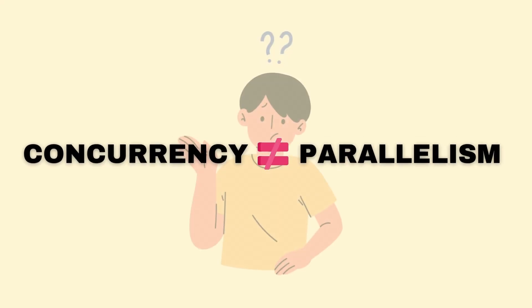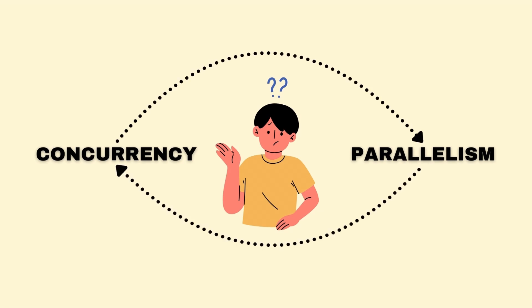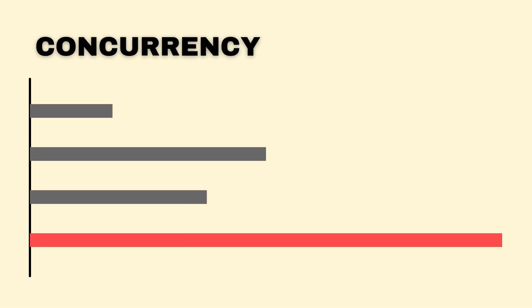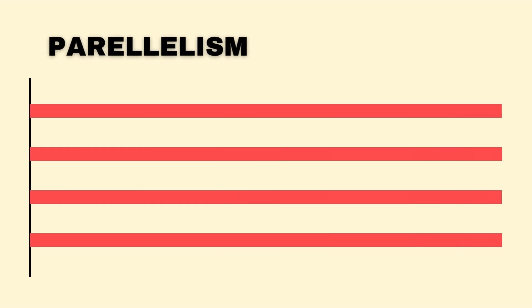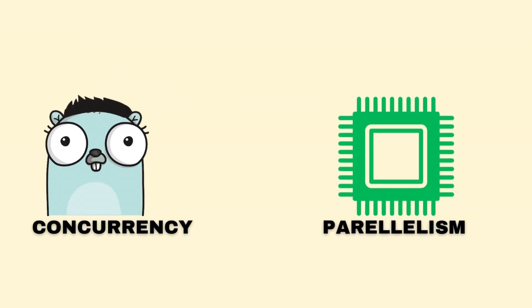Concurrency is not equal to parallelism. The difference between concurrency and parallelism is kind of blurry for most people. Many developers use these terms interchangeably, but this is where you make the mistake. Concurrency is about dealing with multiple tasks at once, while parallelism is about executing multiple tasks simultaneously on multiple processors. Golang supports concurrency, which can enable parallelism depending on the hardware and runtime configuration.